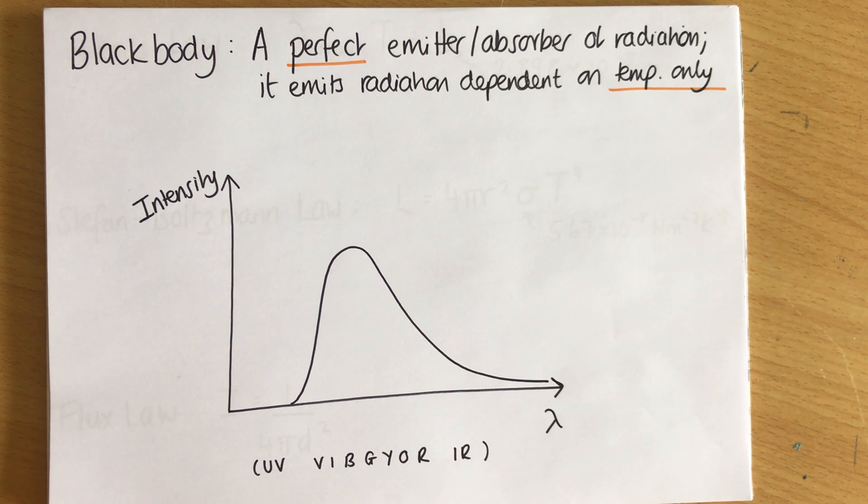Black things absorb and emit radiation better than other colours and a black body is something that emits and absorbs it perfectly. It fits the stats really well and it emits the radiation dependent on temperature only. Now what does that mean?